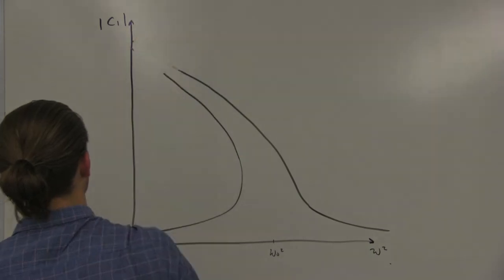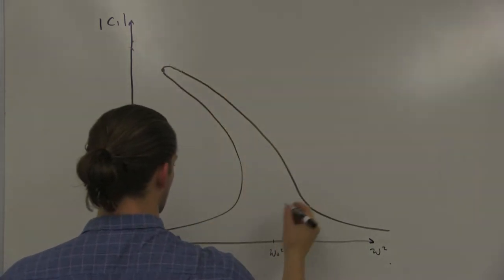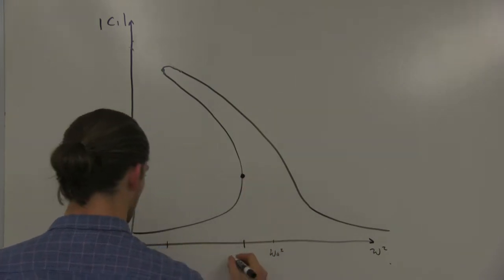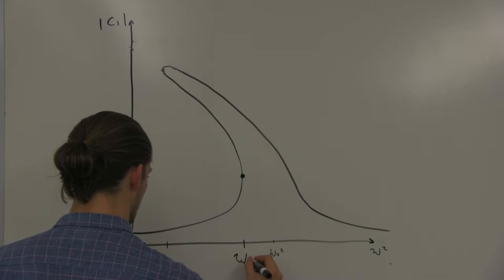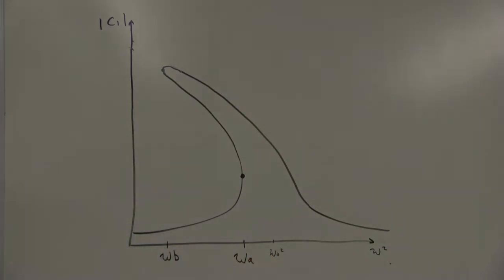If we include damping, the resonance curve changes in the following way. Note that with this change, we have a triple-valued region between omega a squared and omega b squared. This triple-valued region will result in the hysteresis and amplitude jumps that we will observe in experiment.